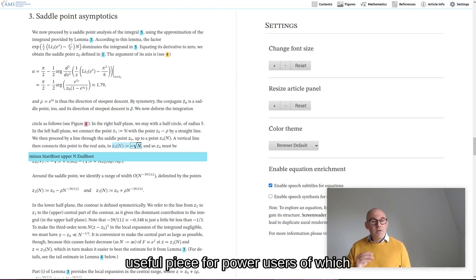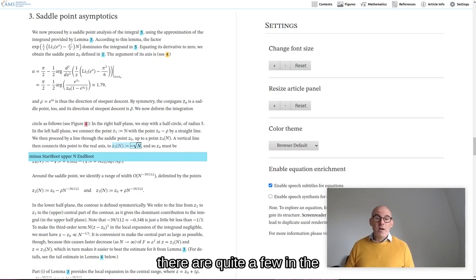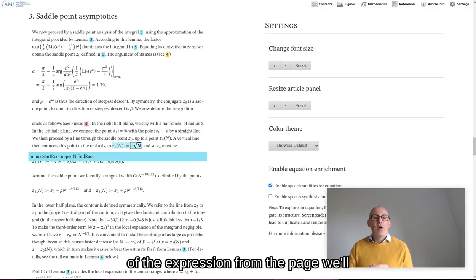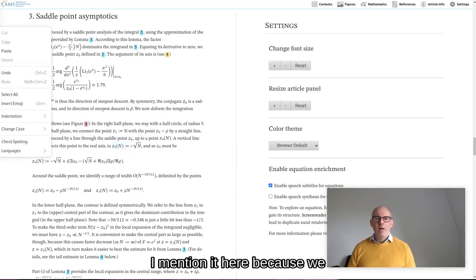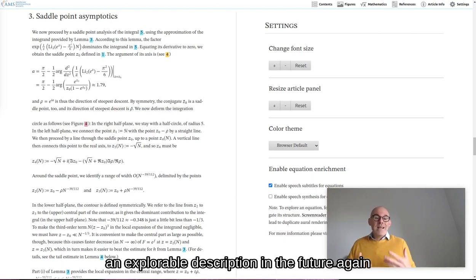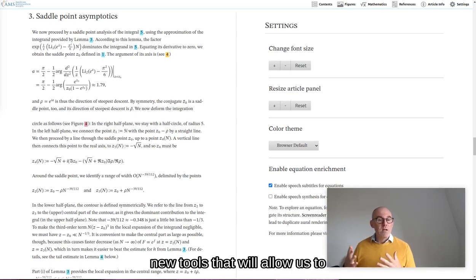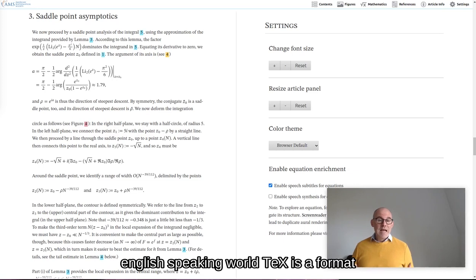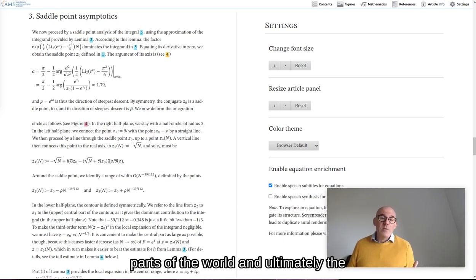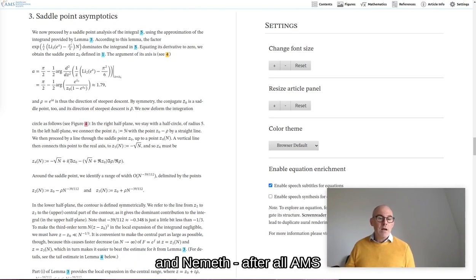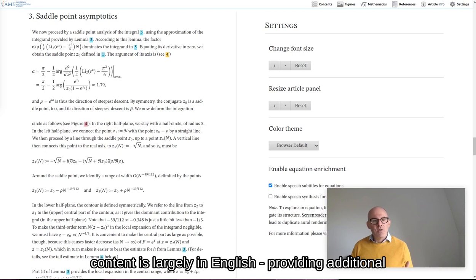On a final note, there is another useful piece for power users, of which there are quite a few in this space. You can, in fact, get the source of the tech of the expression from the page. We'll get back to that later. I mention it here because we hope to expose the tech source as an explorable description in the future. Again, our friends at MathJax have created wonderful new tools that will allow us to create such explorable tech descriptions. That's important because, whereas MathSpeak and Nemeth braille are primarily used in the English-speaking world, tech is a format that is used in other parts of the world and, ultimately, the lingua franca of mathematical writing. So while it makes sense to default to MathSpeak and Nemeth, after all, AMS content is largely in English, providing additional options is important to us.